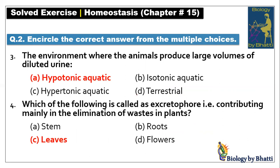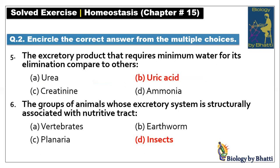Number four: which of the following is the excretory organ contributing mainly in the elimination of waste in plants? The excretory organ is the leaves of the plants, so it should be C option. MCQ number five: the excretory product that requires minimum water for its elimination compared to others — uric acid — answer should be B option.